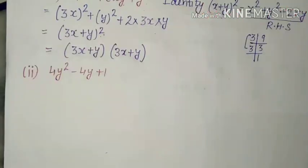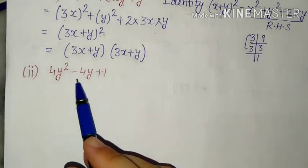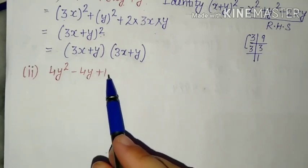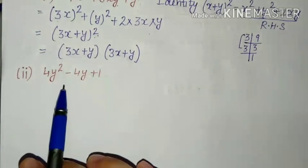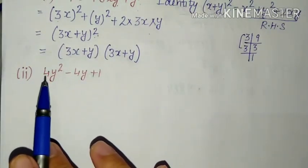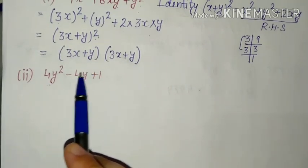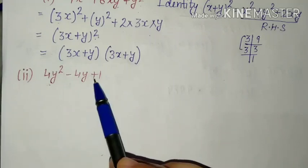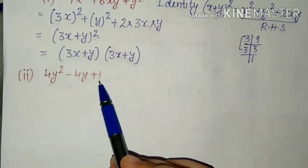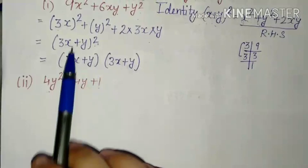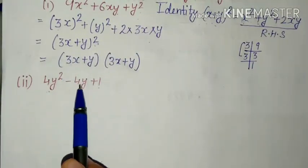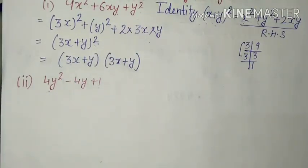Next, second part. Second part mein given hai: 4y² minus 4y plus 1. Isko bhi humne identity ka use karke iske factors banana hai. Ab isme bhi atom square ki hai. Ab yeh 4 — yahan square nahi hai, means yeh term kisi ka square nahi hai. But 1 ko hum 1 ka square likh sakte hain. Isme jo hai ek term minus wali hai — so minus wali term hai. To humne kaun si identity use hogi? Jo humne minus wali identity thi.